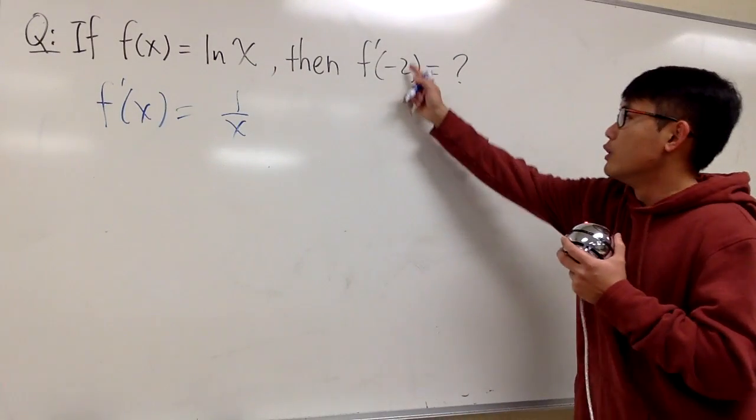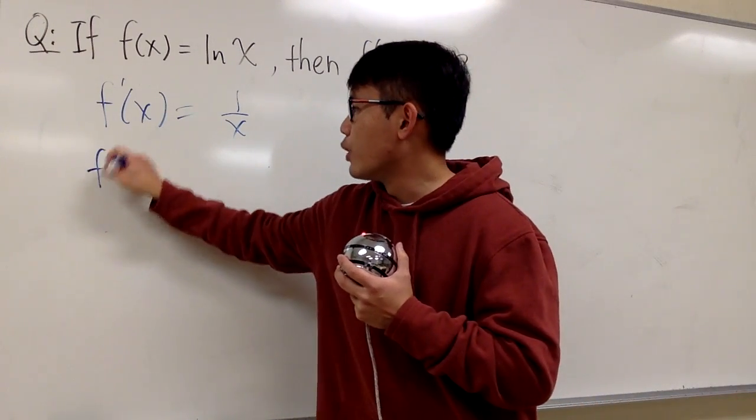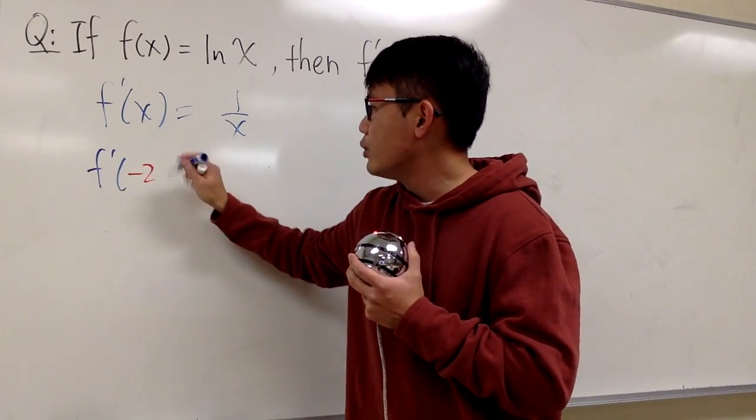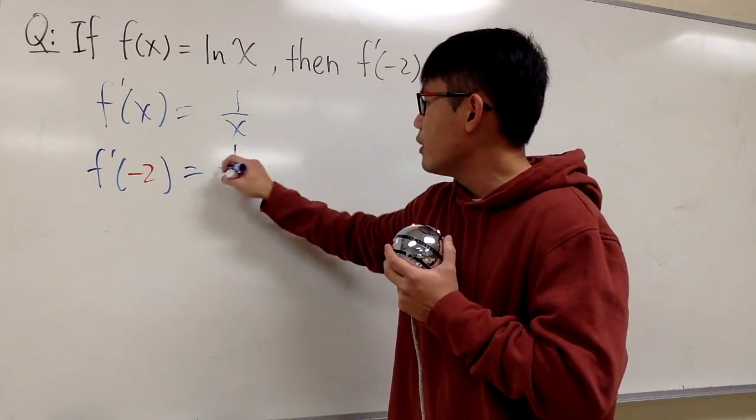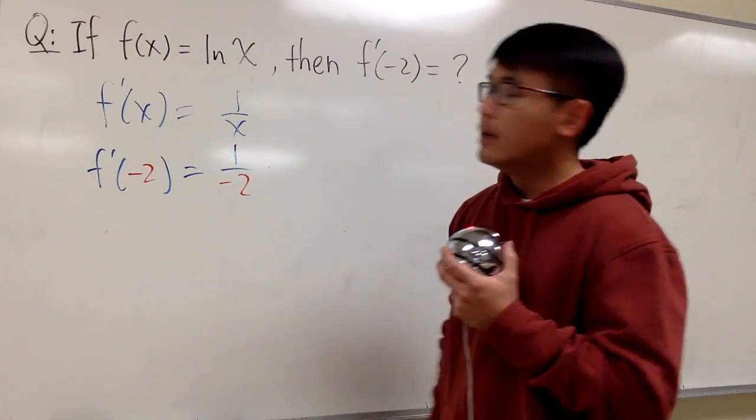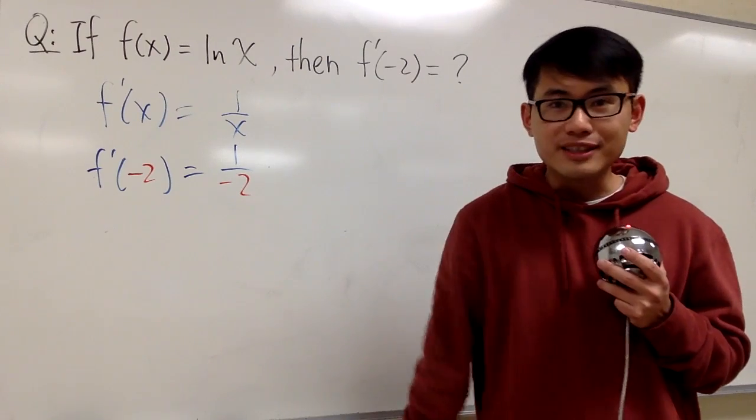And right here, we just have to plug in negative 2 into the x value, so we can just work this out, f' of negative 2 like this, and you get 1 over plug in negative 2 right here. You have 1 over negative 2, and let me tell you guys this.